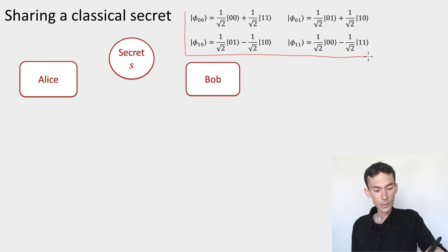Let's be more ambitious than in the first time round. Let's try to share a two-bit secret now. So S will be 00, 01, 10, or 11. And we're going to share this classical secret using entangled states.